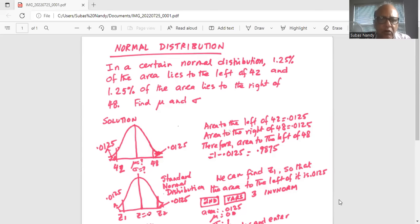So we draw a normal distribution with the peak at the center, highest where the mean is located. The mean is not known. Standard deviation is not known. 42 is a number on the left of the mean. To the left of 42 is 0.0125 area.